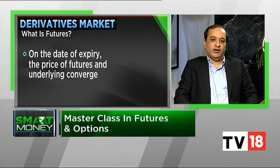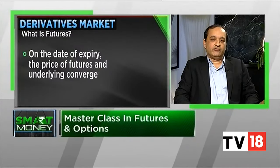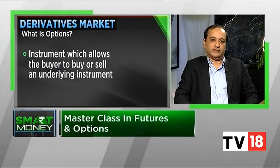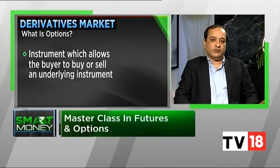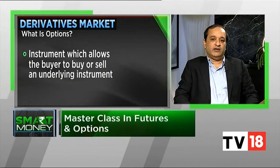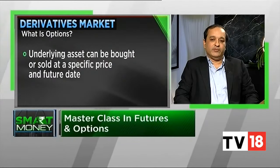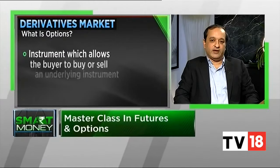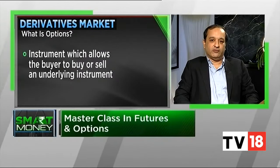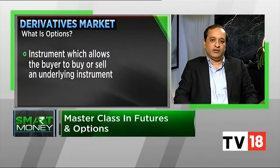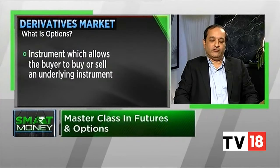When it comes to options, an option is an instrument which basically allows the buyer either a right to buy or sell a particular stock at a particular price on a specified date. For example, a buyer of a Tata Motors call option at a strike of 135 is basically buying the right to buy Tata Motors at 135, irrespective of the market price on the day of expiry, which is 29th of October. To get that right, he has to pay something called the option premium. This is the basic layman's definition of futures and options.